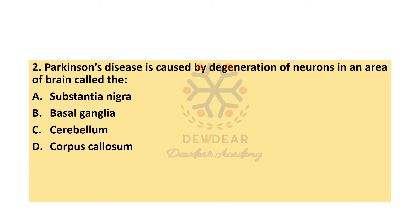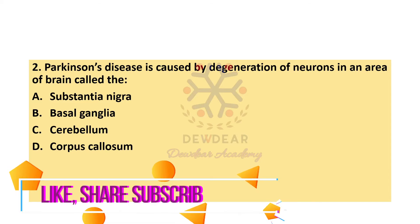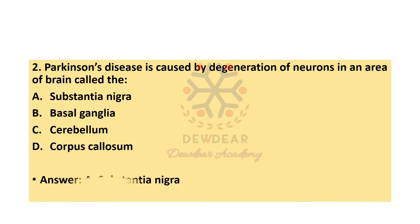Question 2: Parkinson's disease is caused by degeneration of neurons in an area of the brain called — options: substantia nigra, basal ganglia, cerebellum, corpus callosum. The correct answer is option A, substantia nigra.